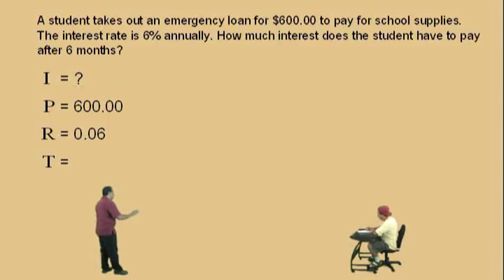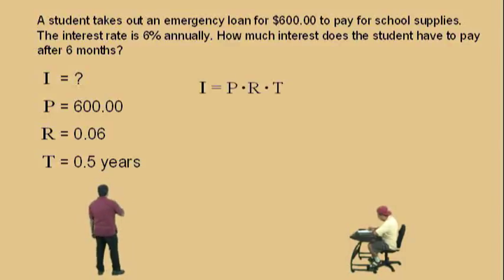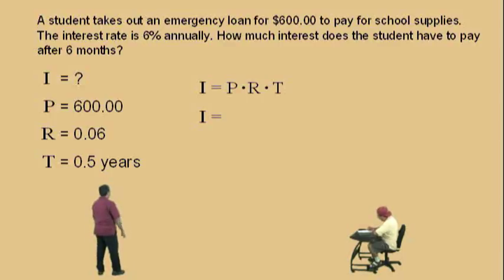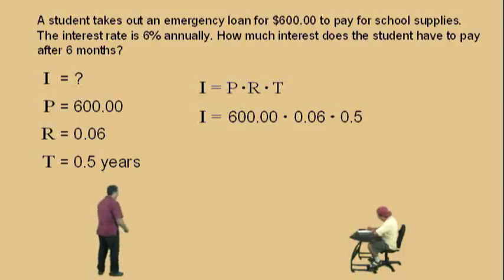The principal is $600. The rate as a decimal is 0.06. And the time in years — six months is 0.5 years. Now we use our formula I equals PRT. Our principal is 600, our rate as a decimal is 0.06, and our time is 0.5.